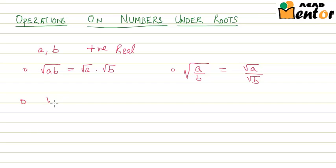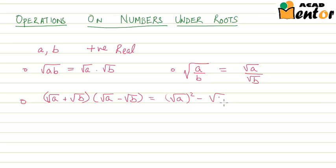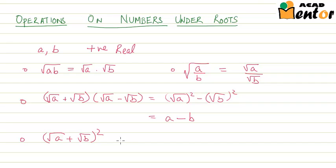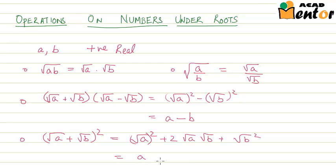Also, root A plus root B multiplied with root A minus root B is equal to root A whole square minus root B square, which is equal to A minus B. Also, under root A plus under root B whole square is equal to A plus two root AB plus B.